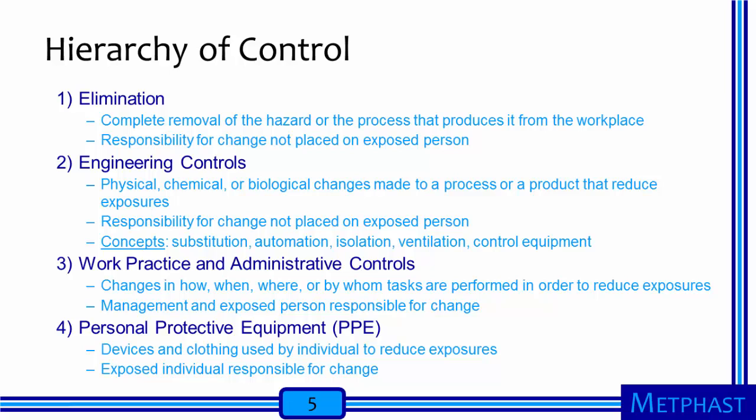Work practice and administrative controls are next on the hierarchy. Work practice controls are changes in how tasks are performed, whereas administrative controls are changes in when, where, or by whom tasks are performed in order to reduce exposures. They are lower on the hierarchy than engineering controls because both management and the exposed person are at least partially responsible for putting changes into effect. Last on the hierarchy is personal protective equipment, or PPE. PPE is last because the exposed individuals are responsible for change—they must put on and use the devices and clothing properly each and every time. This is very challenging, which is why PPE is at the bottom.